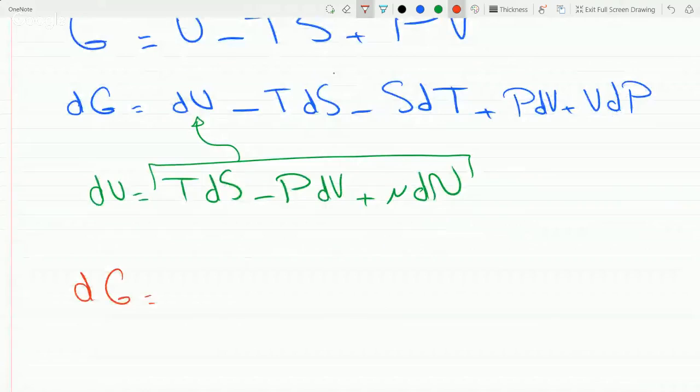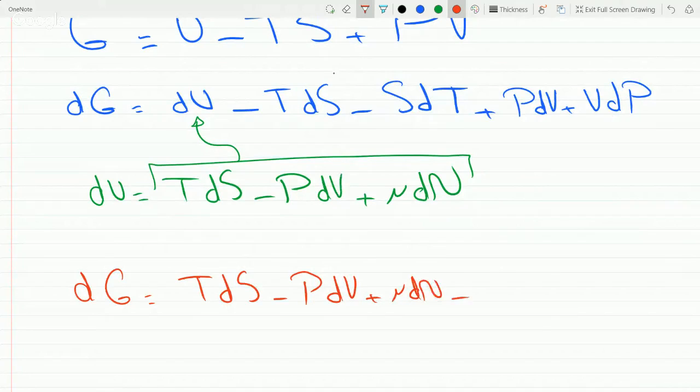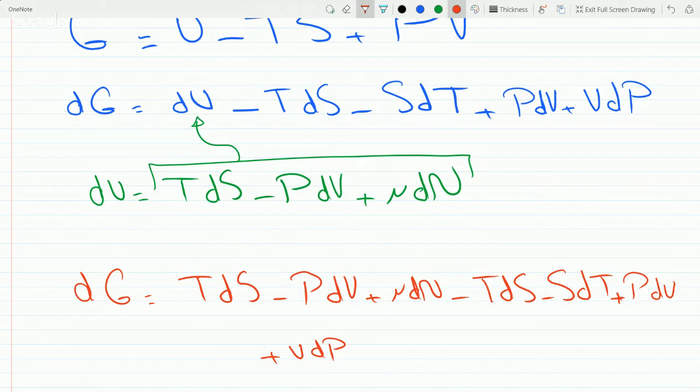is equal to TdS minus PdV plus mu dN minus TdS minus SdT plus PdV plus VdP. And you see that some terms go away.